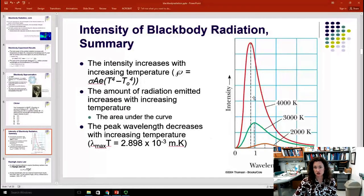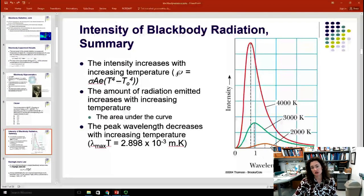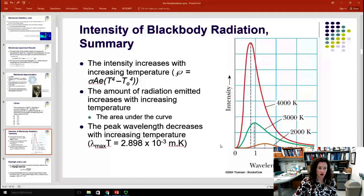The peak wavelength decreases with increasing temperature. Yet again, you can see that. The dashed lines here are drawn from the peak of the curve down to the wavelength axis, so that we can picture this a little bit better. But you can see that the wavelength does, in fact, go down as the temperature goes up. And that's according to Wien's Law.